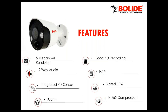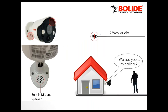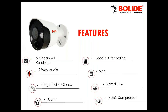This camera is 5-megapixel resolution. It has two-way audio — a great deterrent if somebody is walking towards your house, you can tell them you'll call 911. It has integrated PIR sensors, an alarm feature, and local SD recording, so you can set it up as a standalone without a DVR, recording to a micro SD. It also has PoE (Power over Ethernet), is rated IP66 for outdoor use, and has H.265 compression.